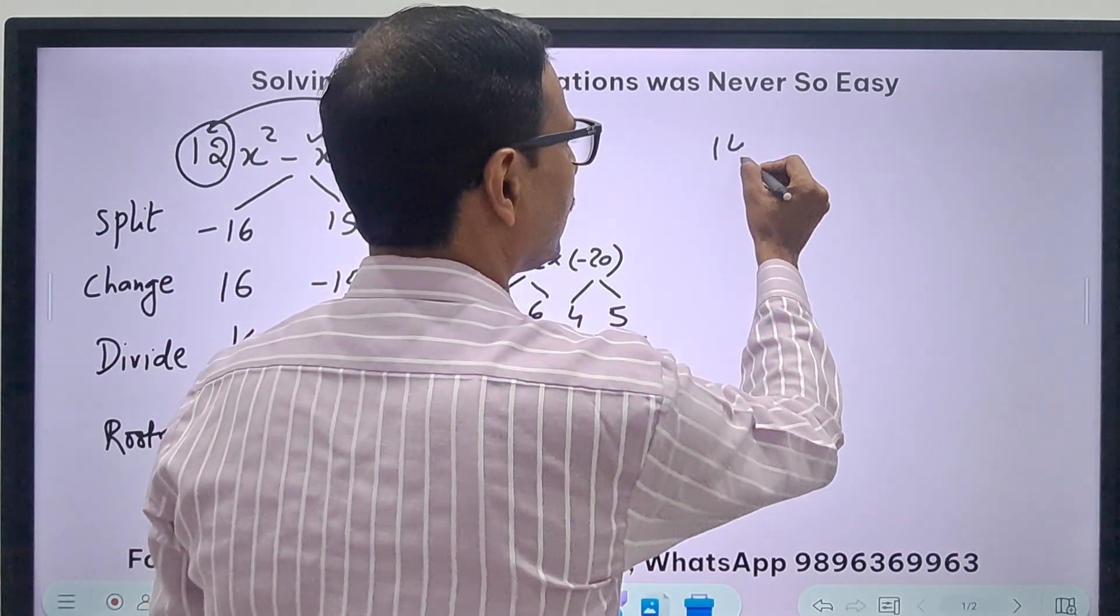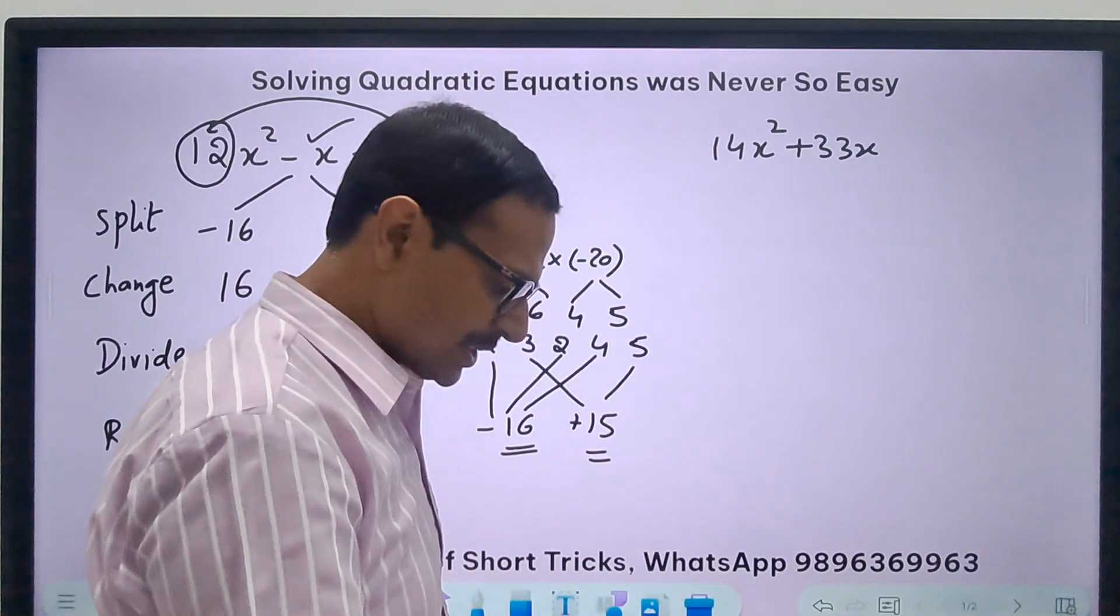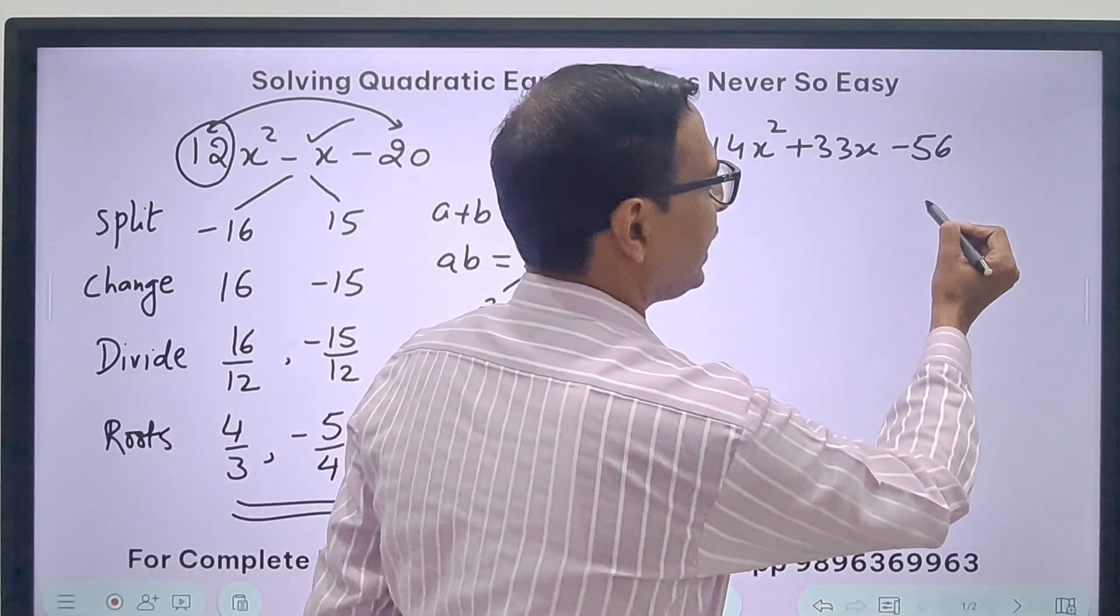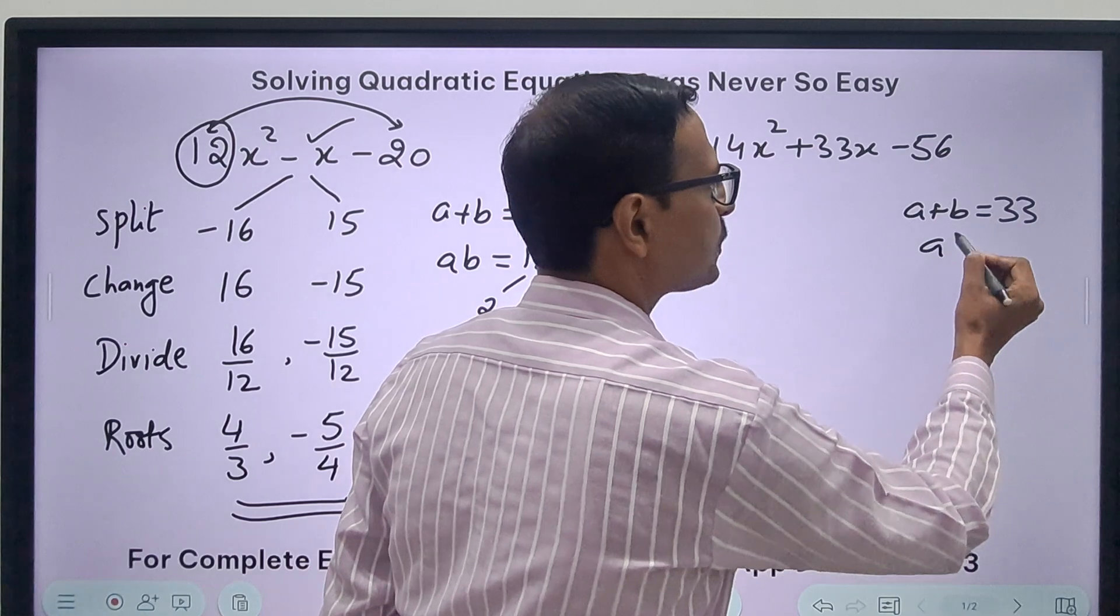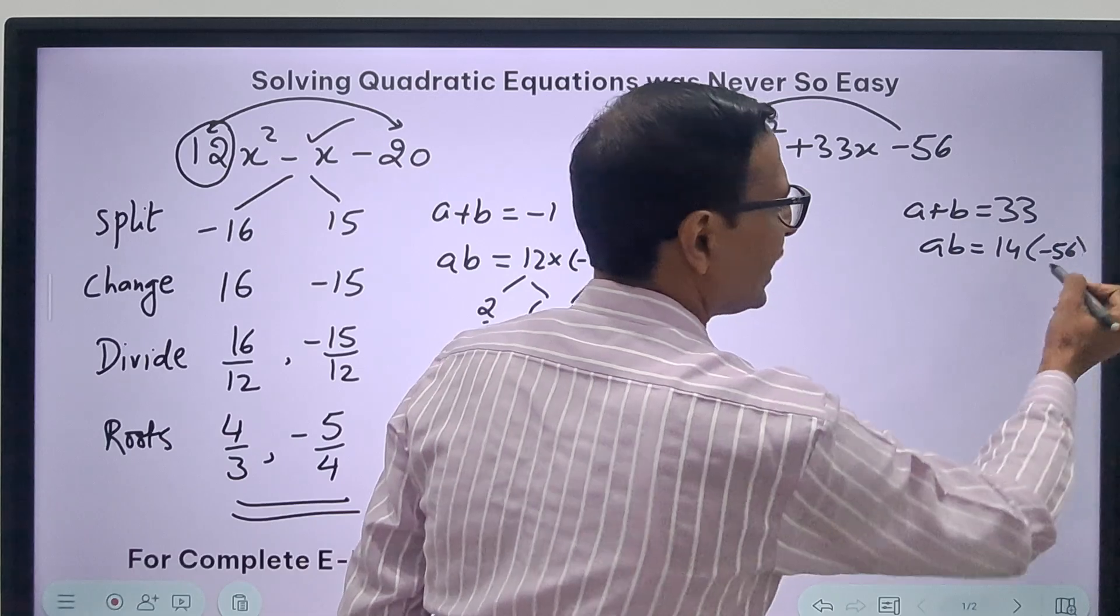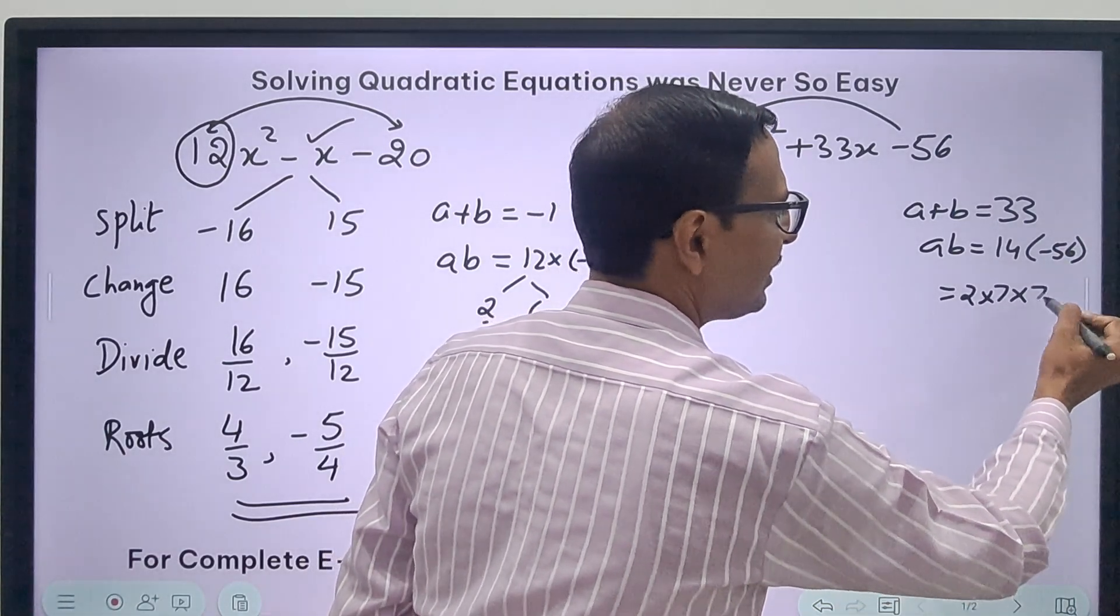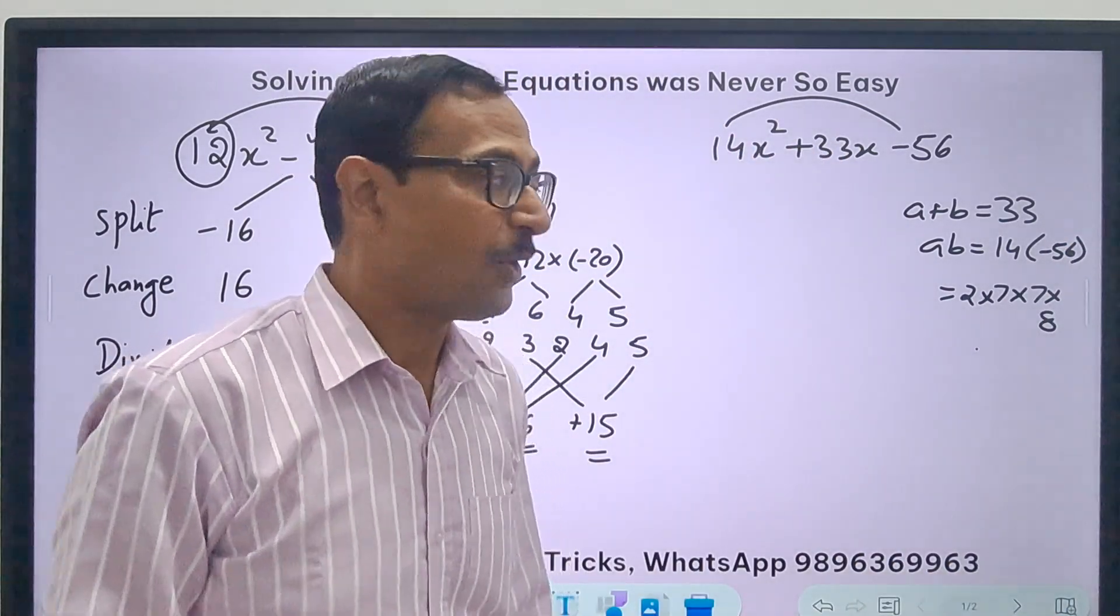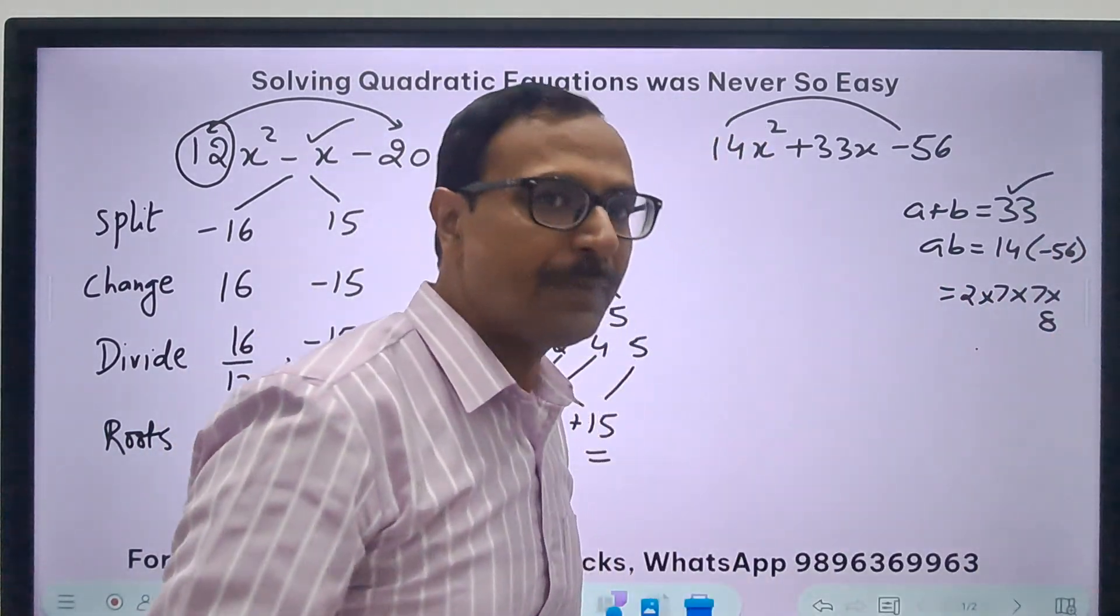Another question is 14x² plus 33x and the constant term is -56. So I need two numbers a and b whose sum is the middle term 33 and whose product is the product of 14 and -56. So let's break these. 14 is 2 times 7, that's pretty easy, and 56 is 7 times 8. Now how do you break the middle term? Is any combination working and giving us 33 as the sum? Let's check.